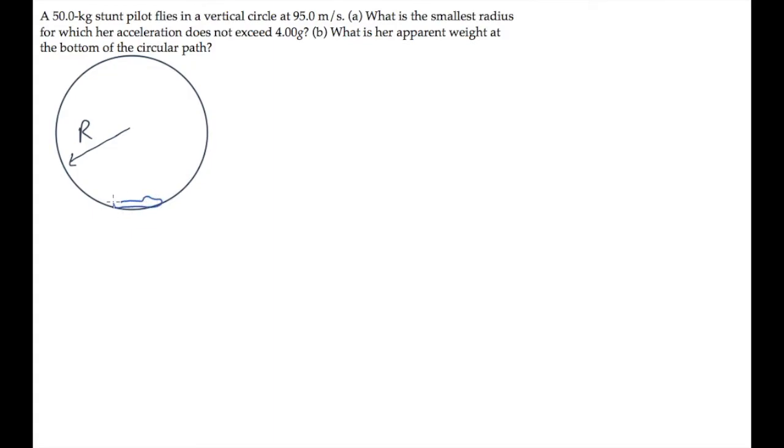The airplane in this problem flies in a vertical loop at 95 meters per second, going around this circular path, so that everywhere it has a centripetal acceleration, a_c, directed towards the center of the circle with a magnitude of v squared over r.